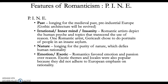I is for Irrational — the mind, insanity. Romantics were interested in the human psyche and problems like dreaming or madness. Asylums became a big issue during this time and that's reflected in the art. N is for Nature — a longing for the purity of nature, but also seeing nature as wild and uncontrollable.